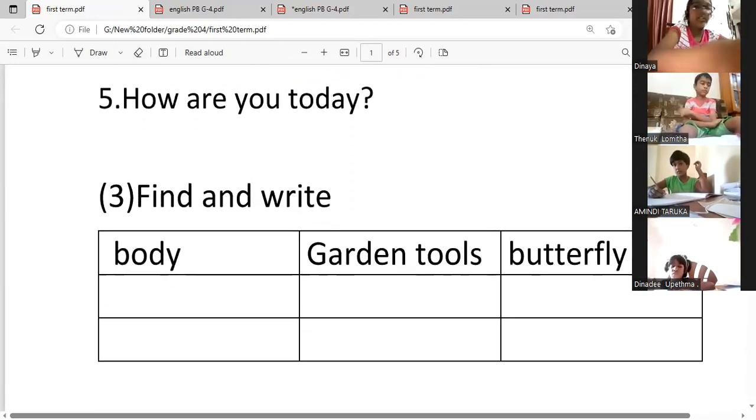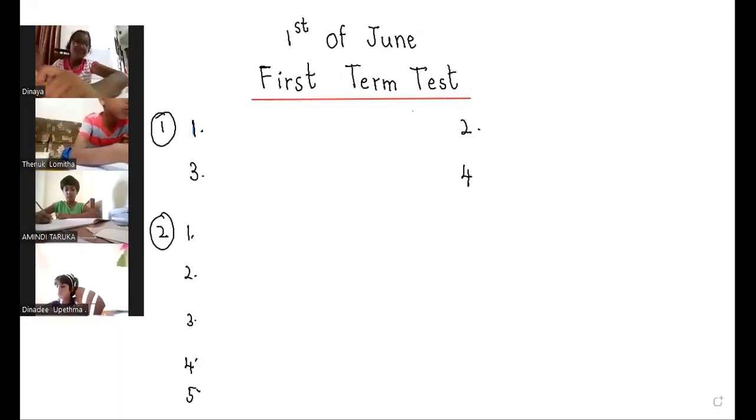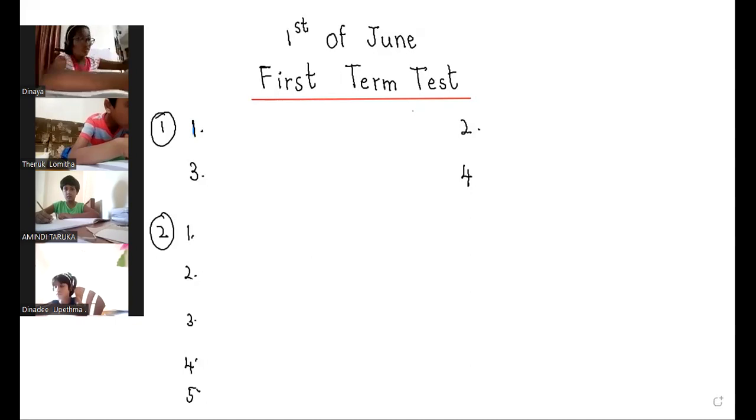Want to draw a table. Draw your table — one column, draw three columns. Take your ruler and divide your book into three columns.